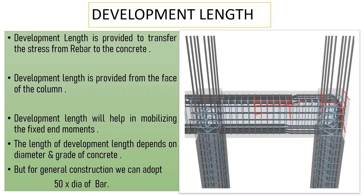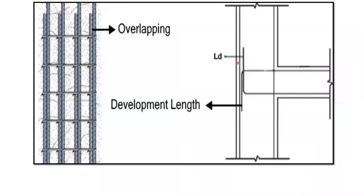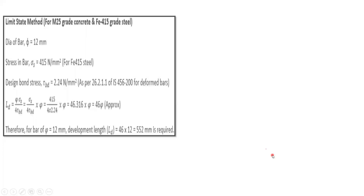So to summarize: development length transfers stress from the rebar to the surrounding concrete, whereas lap length transfers stress from one rebar to another rebar. For both, you can apply 50 times the diameter of the bar, though the exact value depends on the grade of concrete and the diameter of the bar being used.